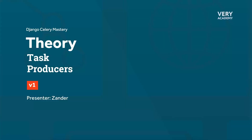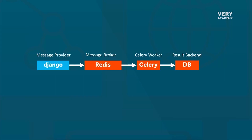In the context of Django Celery, task producers or message providers are components responsible for generating and sending tasks to the Celery worker process for execution. Think of a task producer as a piece of code — a function — that can be part of any part of the Django application, such as the view, the model, or maybe management commands. This piece of code identifies the task that needs to be executed asynchronously and then uses Celery's API or decorators to define and send those tasks to the message broker, which in this case is Redis.